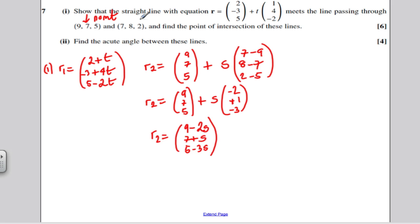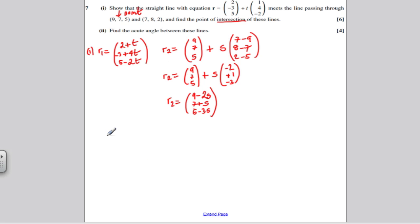For two lines to have a point of intersection to meet, their vector equations must be equal for some t or some s. So let's just write the equivalent equations. If these two things are equal, then I could certainly say that 2 plus t would be equal to 9 minus 2s, and I'd call that my equation 1. I would say that minus 3 plus 4t would be equal to 7 plus s, and that would be equation 2. And I would say that 5 minus 2t would equal 5 minus 3s, and that would be my equation 3. Now, I've got three equations with two unknowns, I'd just have to solve these simultaneously.